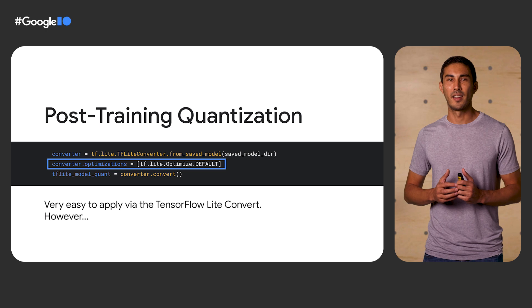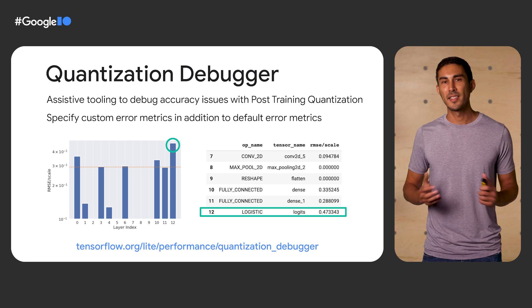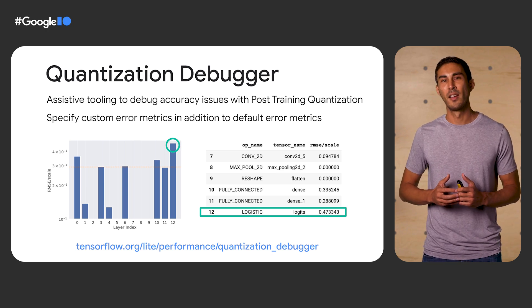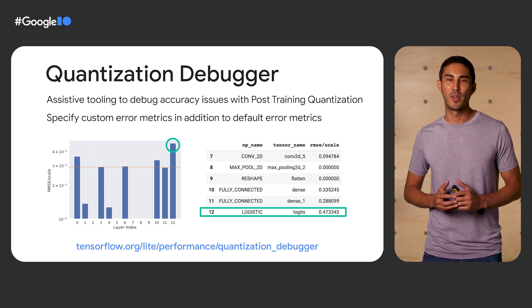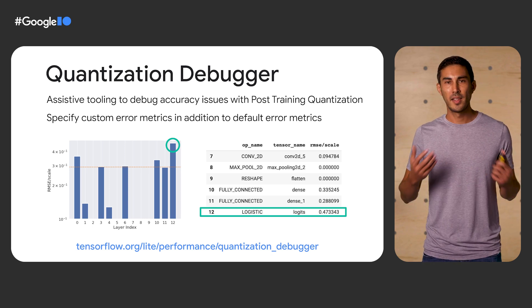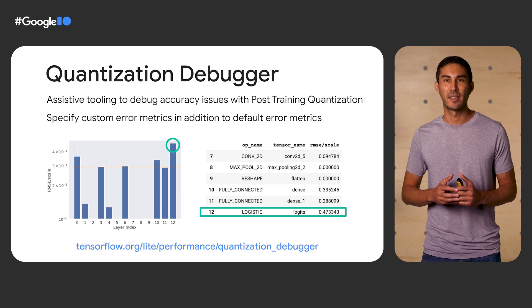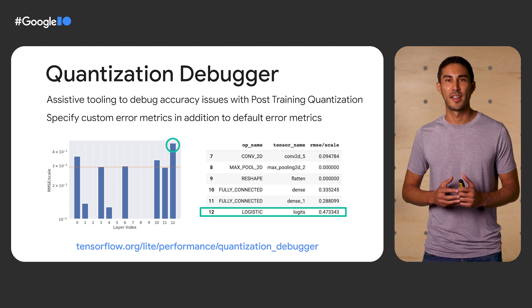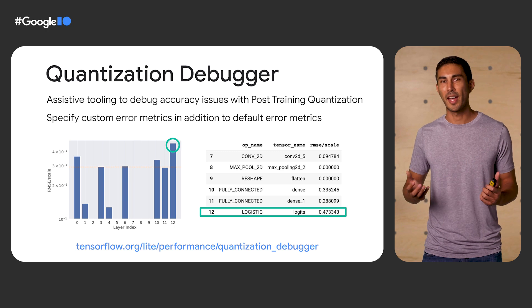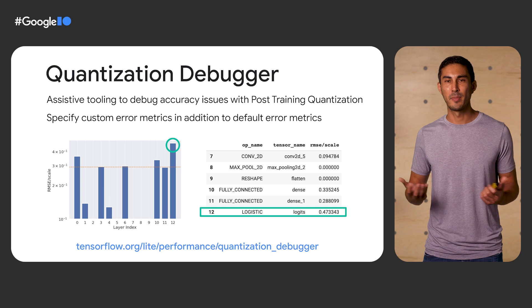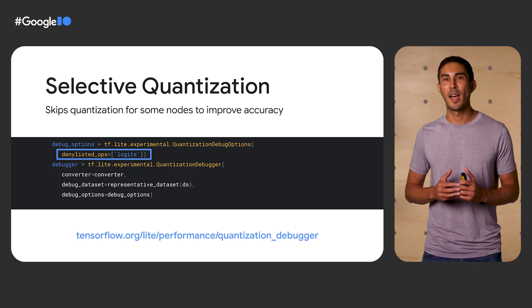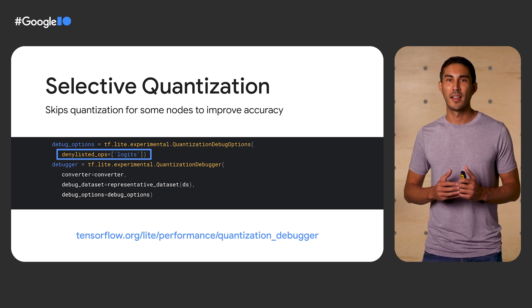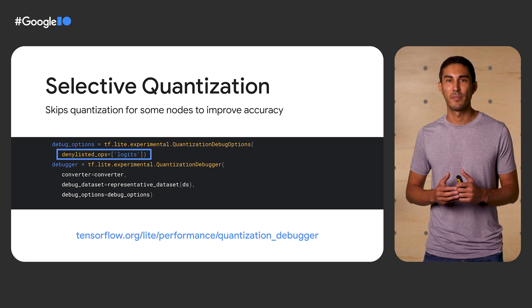The quantization debugger provides Sam with insight to understand and debug where accuracy is affected in the model. It compares the inputs and outputs of the quantized model to the float model, providing helpful metrics. In this example, we can see that layer 12 of the model has higher than expected error metrics, suggesting it was not quantized effectively. Selective post-training quantization allows skipping quantization for some nodes so calculations can happen in the original floating-point domain, helping recover model quality at the cost of some increase in model size and inference latency.